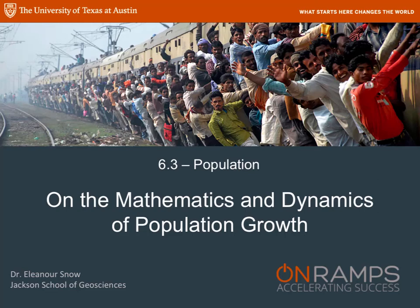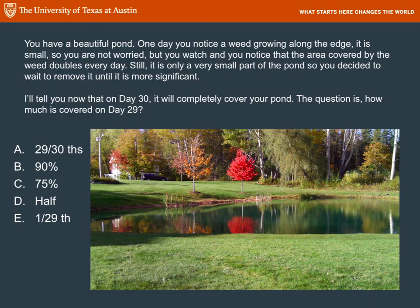This mini-lecture is about the mathematics and dynamics of population growth. You have a beautiful pond. You go out there every day to fish or sit on the deck and enjoy the view. One day you notice there's a weed growing along the edge, and it's very small, so you're not worried.